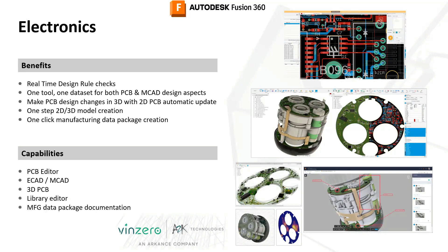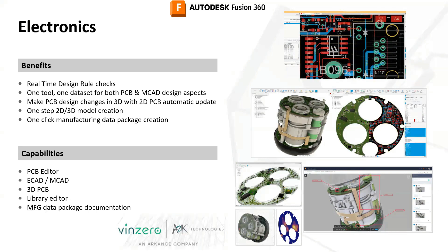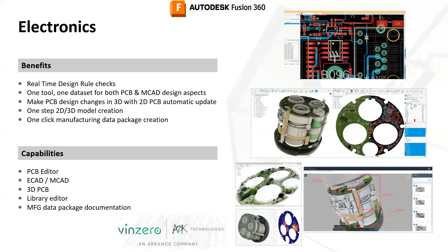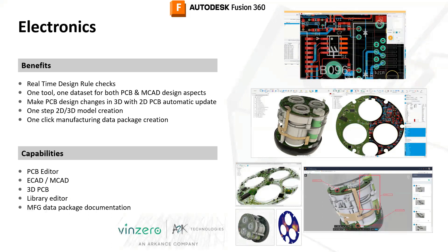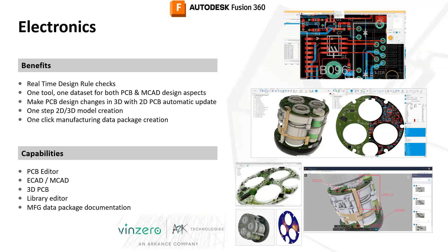Electronics is another area that's quite unique to Fusion 360. It's a comprehensive tool for developing printed circuit boards, with a component library within the software. It means we can link up all our electronic scenarios within our CAD model and also our mechanical models, so for anything where those two systems cross-pollinate we can work through the various designs. We've got a complete set of tools for PCB libraries and component selection wizards.